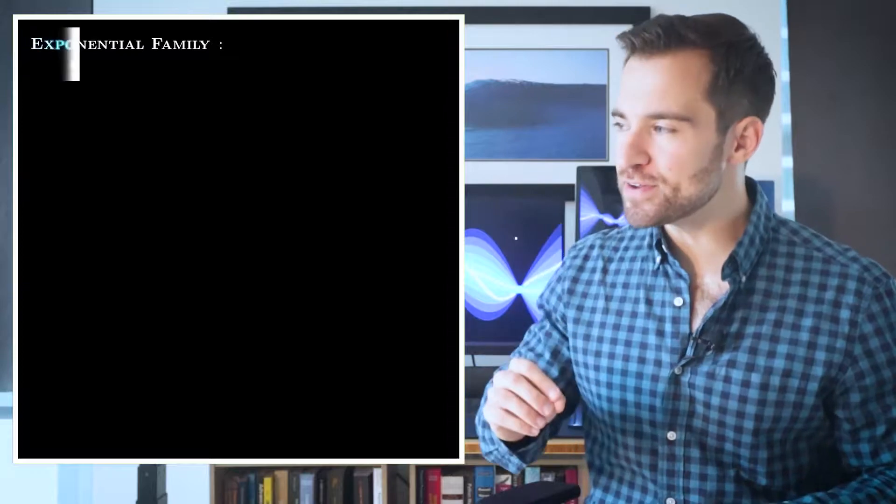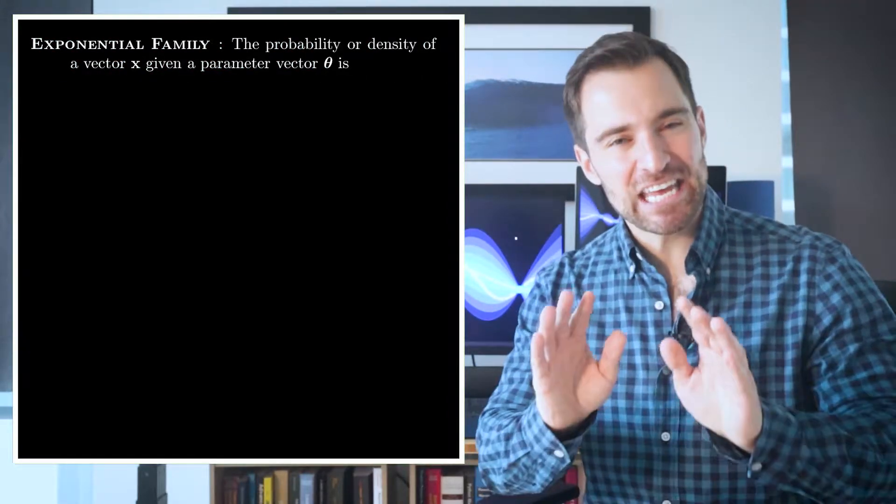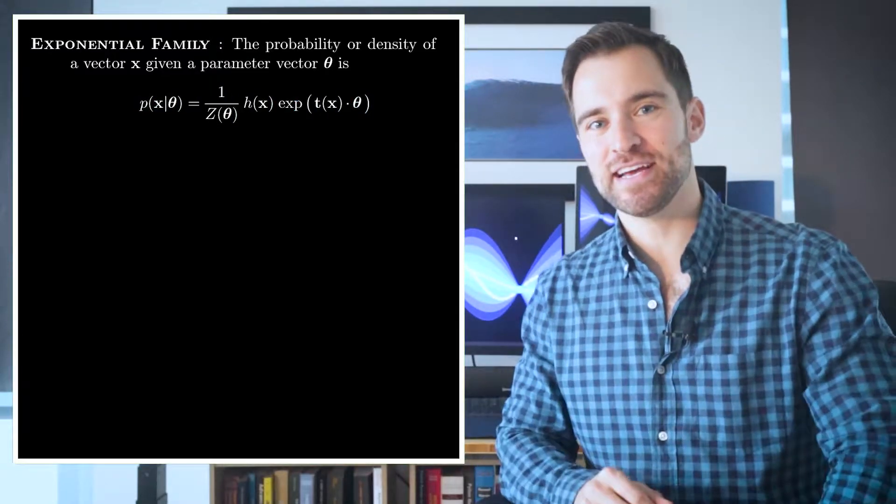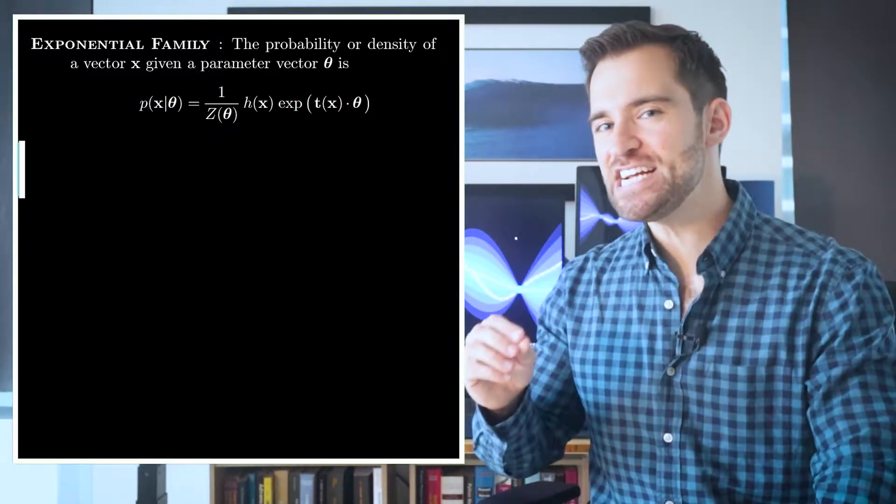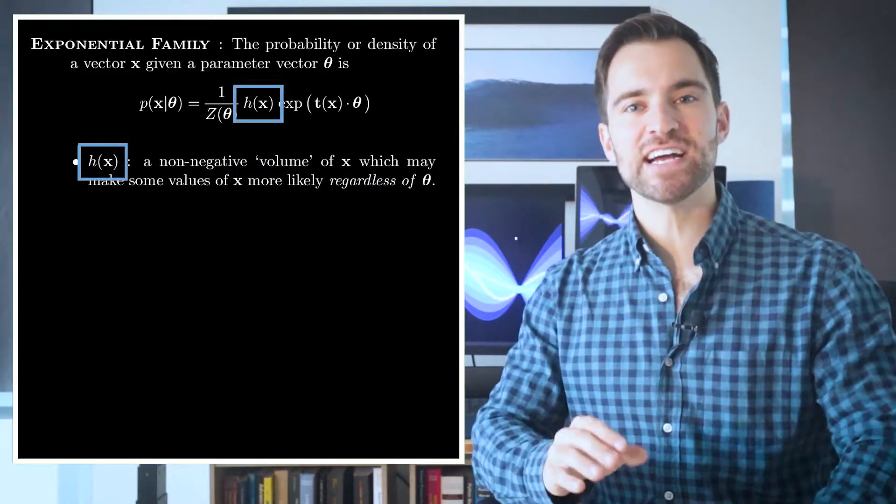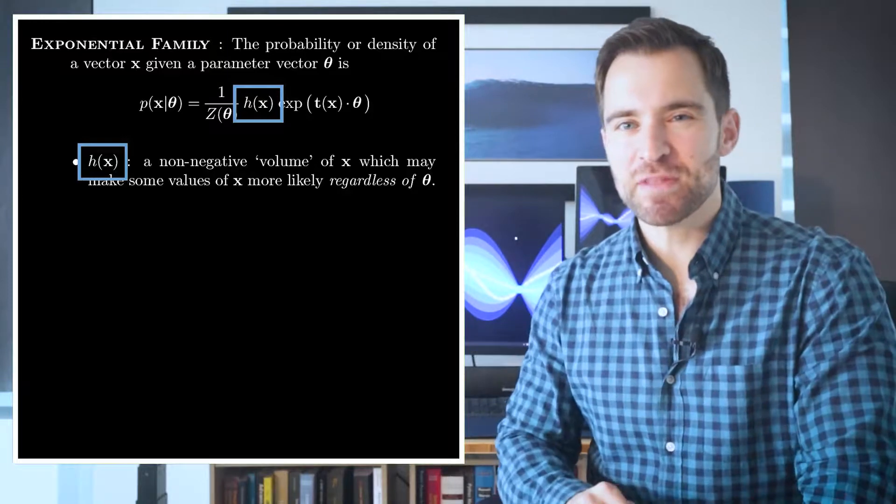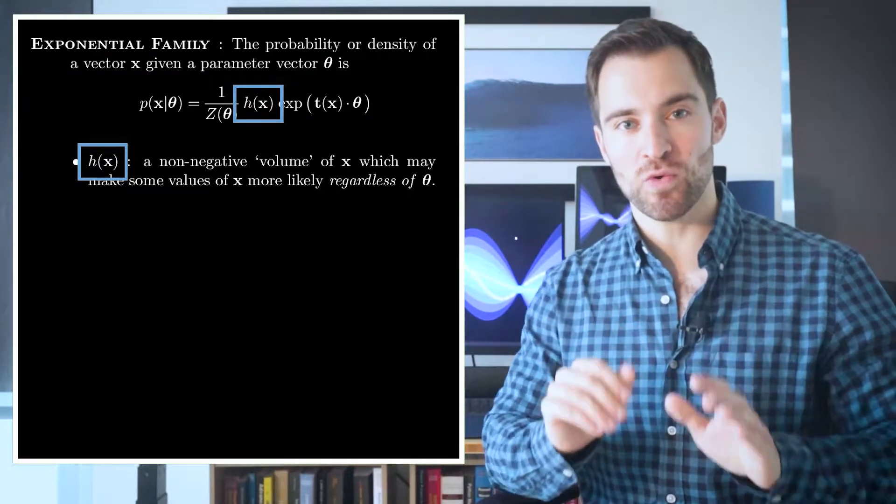If the probability or density of a vector x given a parameter vector θ can be expressed like this, then it's within the exponential family. Here, h may make some values of x more or less likely regardless of the parameters.